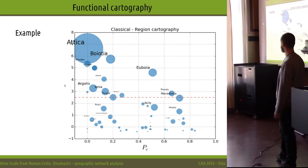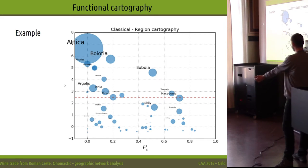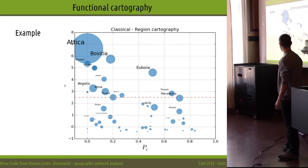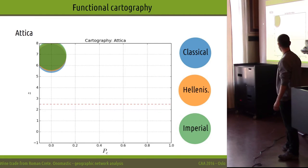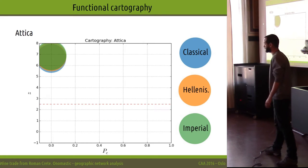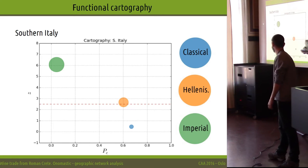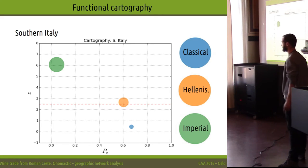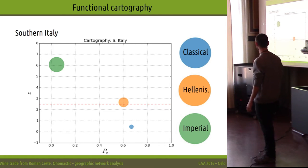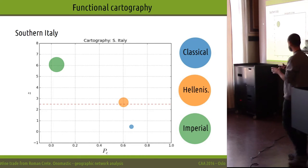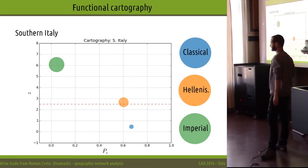For example, Attica is the biggest region and is mainly focused on one community — it constitutes its own community. We can see what happens when jumping from one period to another: Attica stays consistently the same. We observe how Greek names start to be fewer in the so-called classical period, then begin appearing in waves, and in the imperial period Greek names are strong enough to form a community and make Southern Italy the most important region within its own community.